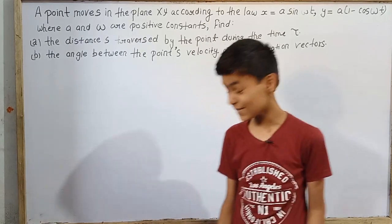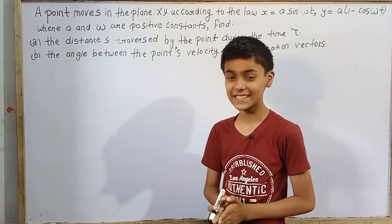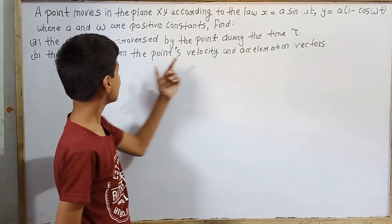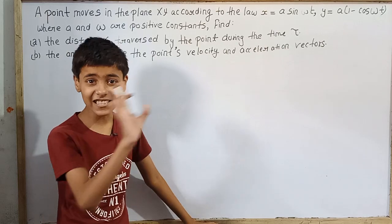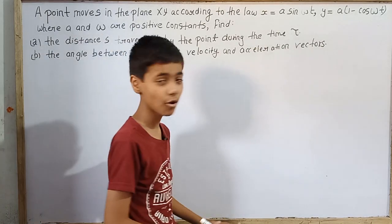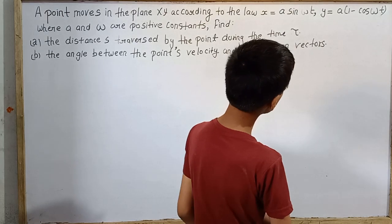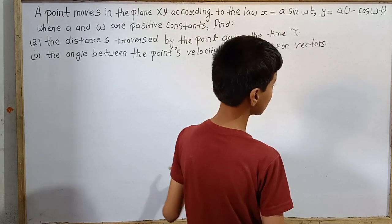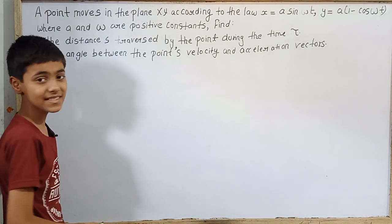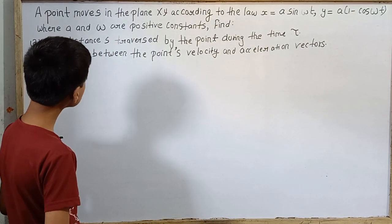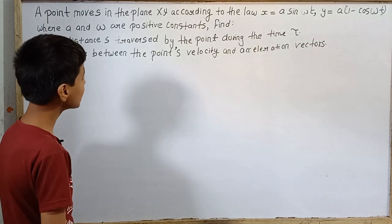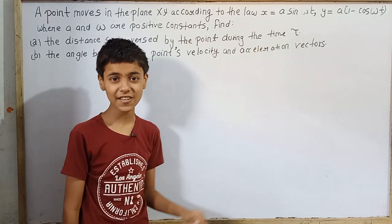Hello everyone, and we are back again with Irodov Professor's textbook problems in general physics. Question number 26 from kinematics. Today's question is: a point moves in the plane xy according to the law x = a·sin(ωt) and y = a(1 - cos(ωt)), where a and ω are positive constants. Find: (a) the distance traveled by the point during time τ, and (b) the angle between the point's velocity and acceleration vectors.